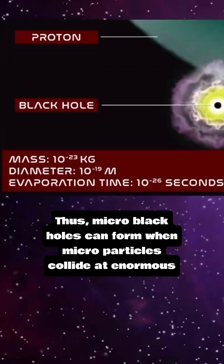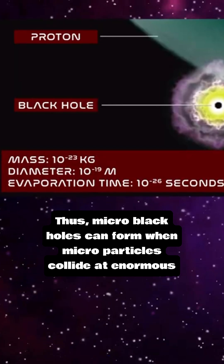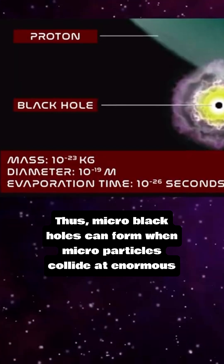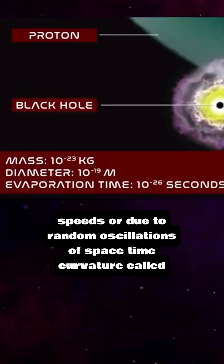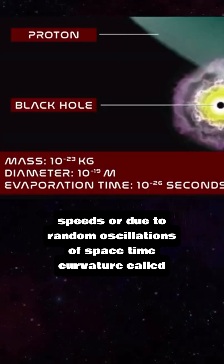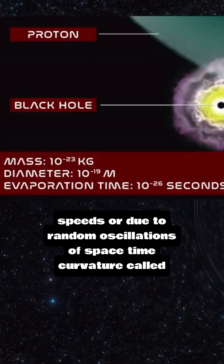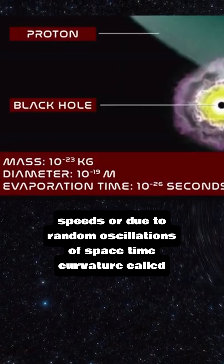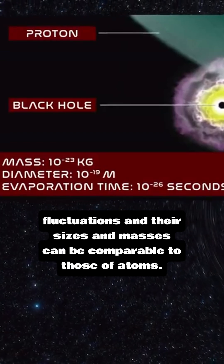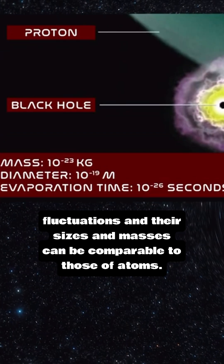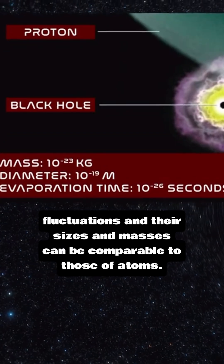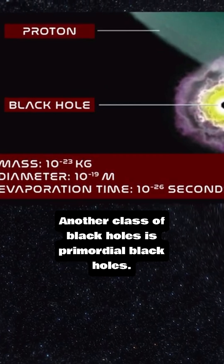Thus, micro black holes can form when microparticles collide at enormous speeds, or due to random oscillations of spacetime curvature called fluctuations, and their sizes and masses can be comparable to those of atoms.